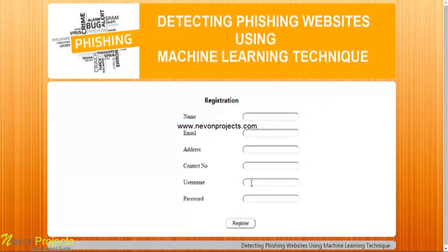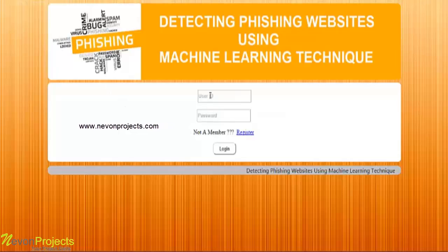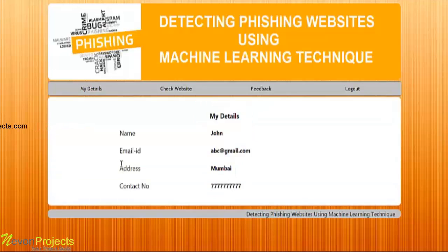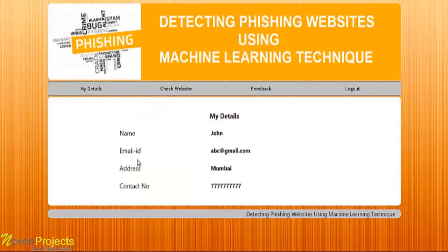The user must also specify his credentials — username and password — which are used for login. I had already registered myself, so I've used my ID and password to log in. Once the user enters the ID and password and clicks the login button, he will be redirected to the my details module, where he can view his personal details: name, email, ID, address, and contact number.